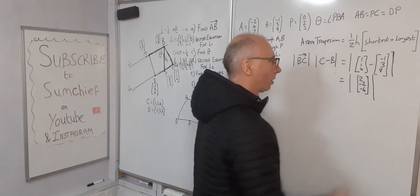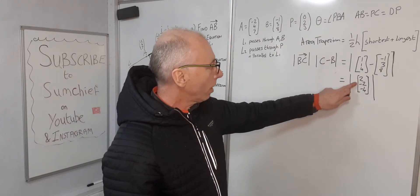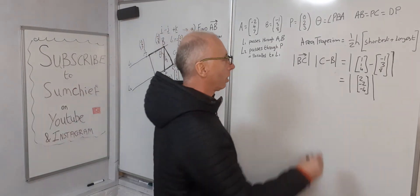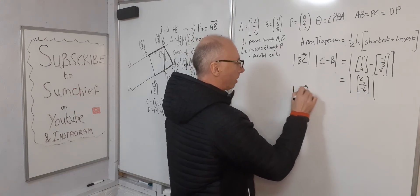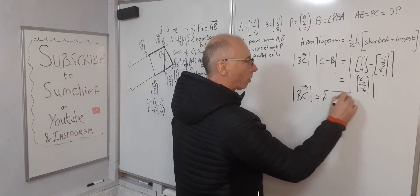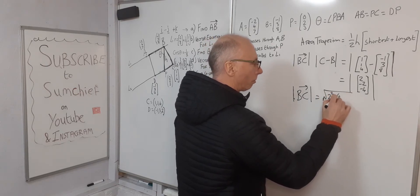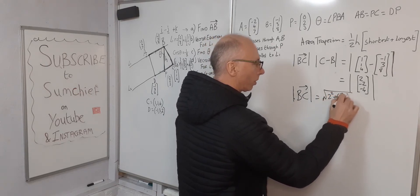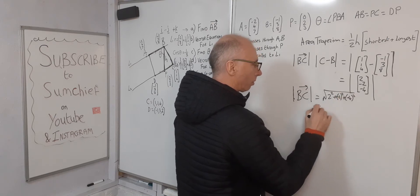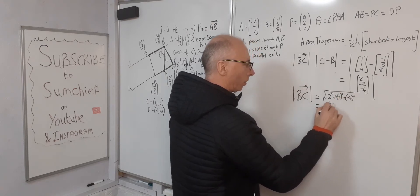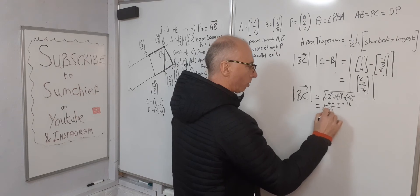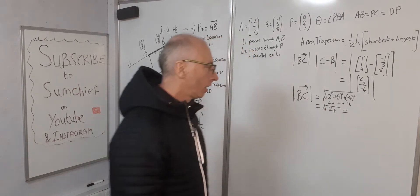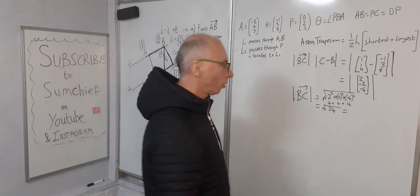There we go. So now to work this out, we take the square root of each of those. We can say that absolute value of BC equals √(2² + (-2)² + (-4)²), which equals √(4 + 4 + 16). So that equals √24, which is 2√6.